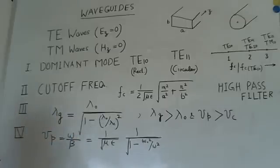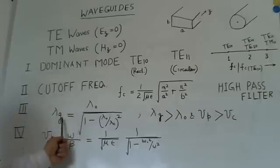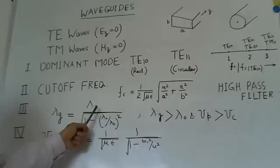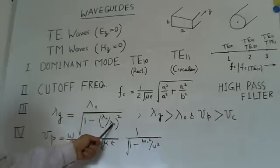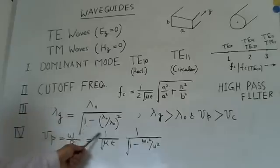Now, what we notice here is, this lambda_g, since lambda naught is the free space wavelength, this free space wavelength and lambda_c is the cutoff wavelength, it is observed from this relation, because this factor will be less than 1, so lambda_g will be greater than lambda naught.